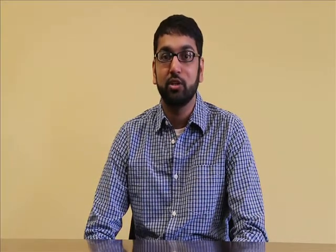Our goal with this work was to create a whole-cell biocatalyst in E. coli for the hydration of CO2. We chose to do so to eliminate purification costs and also increase the recyclability of our catalysts. In order to create our whole-cell biocatalyst, we used periplasmic expression of carbonic anhydrases.